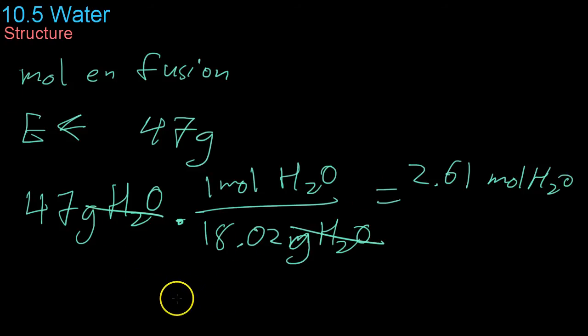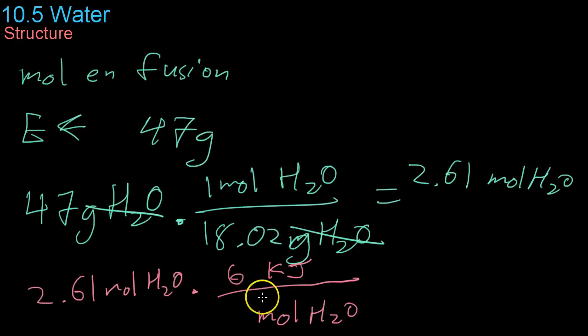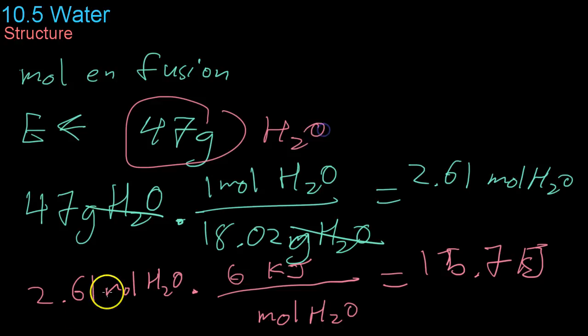If you want to find the energy released once that water freezes, you would take the 2.61 moles of water and multiply by the molar enthalpy of fusion. For each mole of water, about 6 kilojoules are released when it freezes. So you do the math and you end up with about 15.7 kilojoules of energy are released when 47 grams of water freeze.